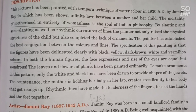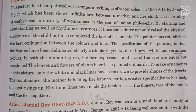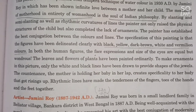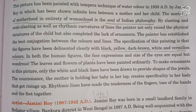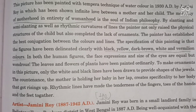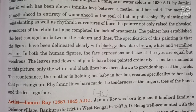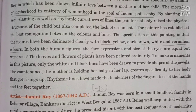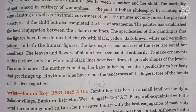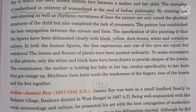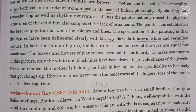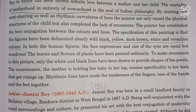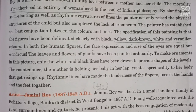The specification of this painting is that the figures have been delineated clearly with black, yellow, dark brown, white, and vermilion colors. In both human figures, the face expression and the size of the eyes are equal and wondrous — the face size and eyebrows are approximately the same. The leaves and flowers of the plant have been painted ordinarily. To make the ornaments in the picture, only white and black lines have been drawn to provide the shape of the jewels.